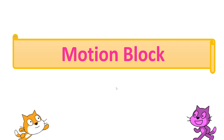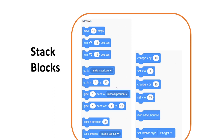These motion blocks are further categorized into two parts: one is the stack block and the second is the reporter block. Stack block has 15 and reporter block has 3. Stack blocks are rectangular in shape, and you use stack blocks with other code blocks available in Scratch like controls, events, looks, and many more. You can add them above or below any other code block for performance of your program.